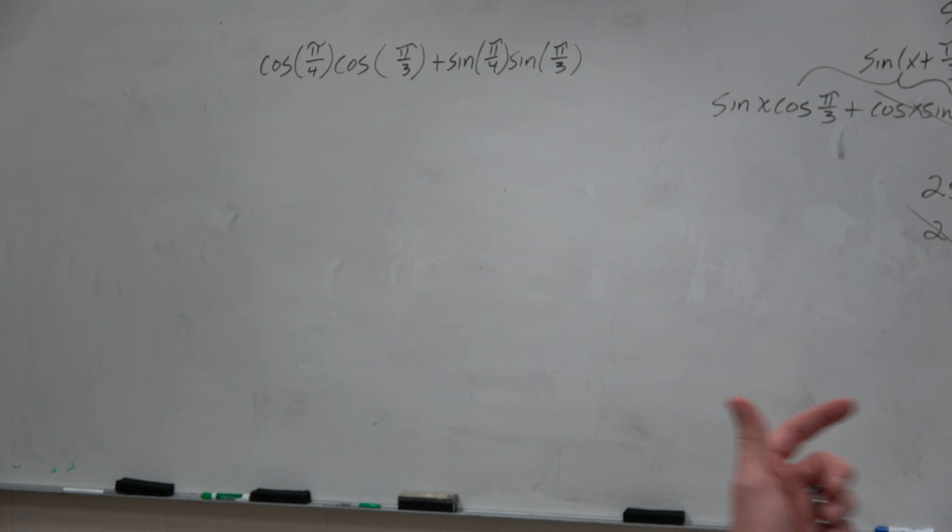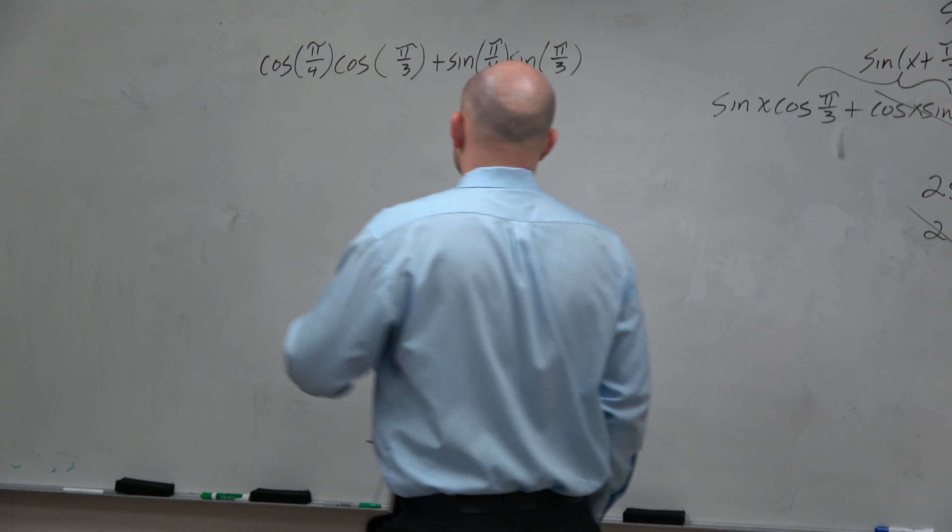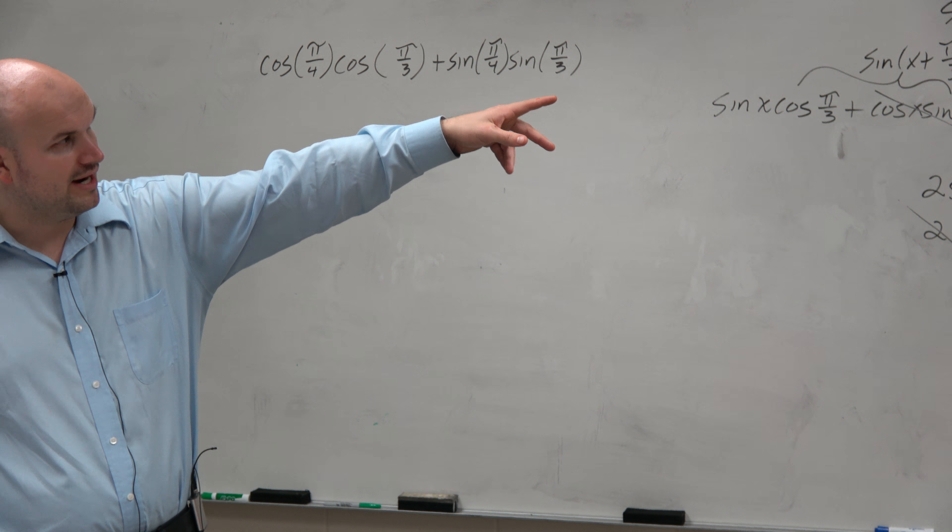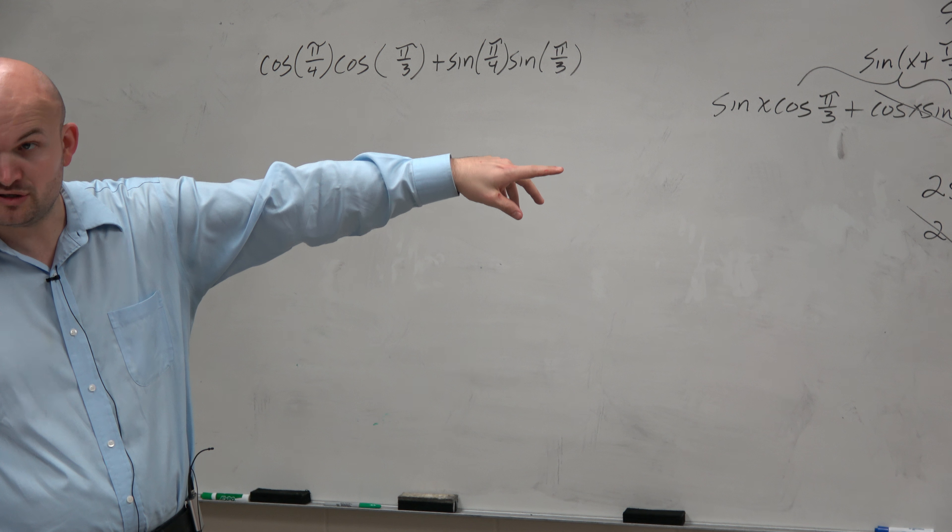You can see that this looks like one of my identities, correct? And guys, there's only three identities that we're going to be picking for the sum and difference. We have sine, the cosine, or the tangent.